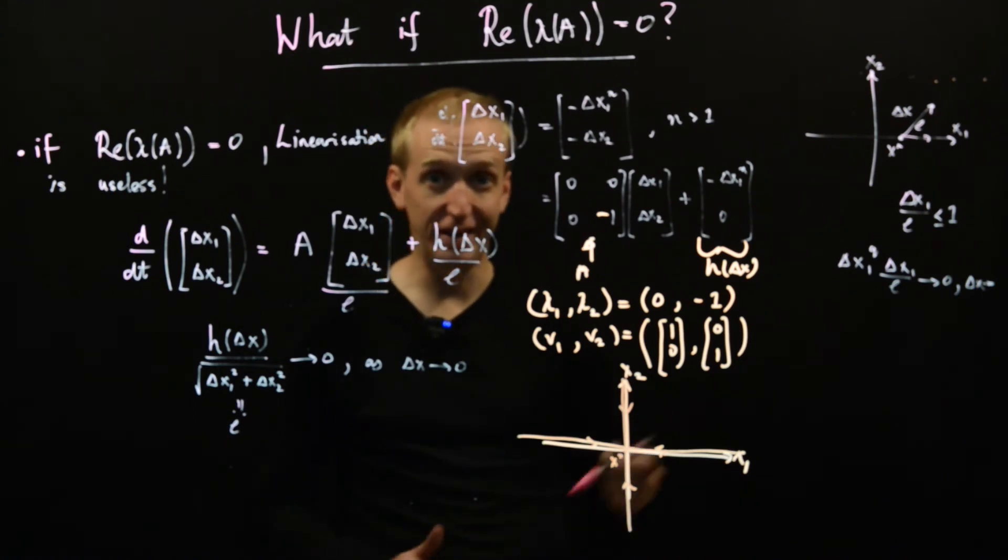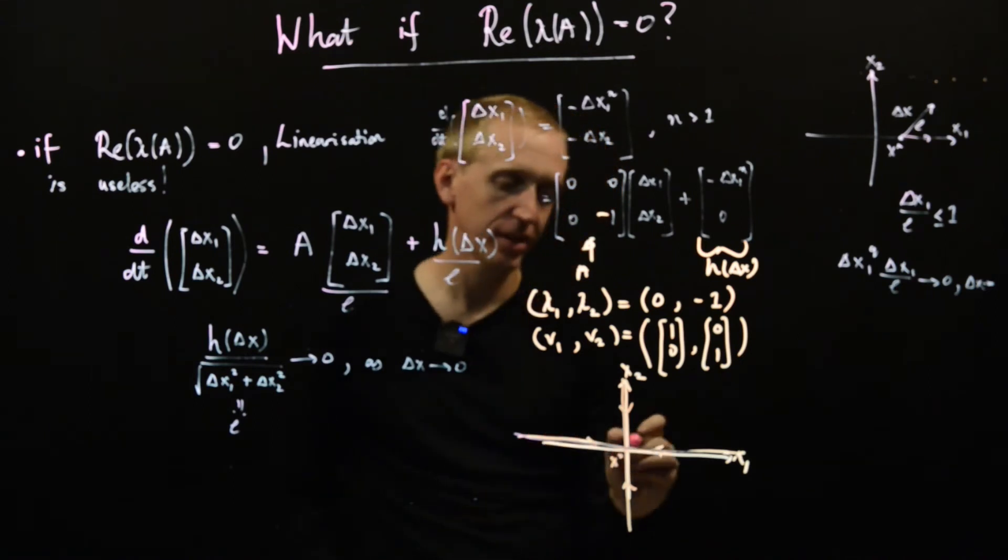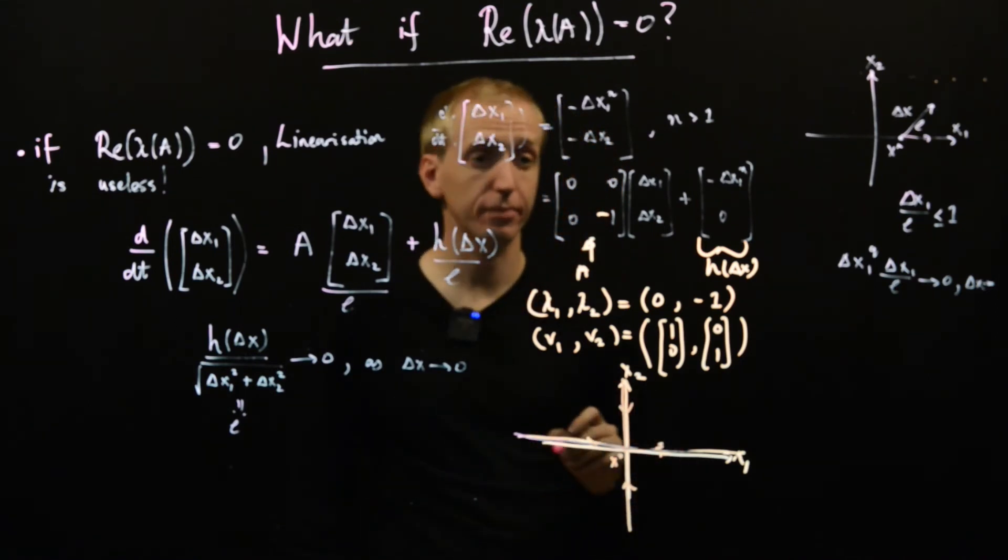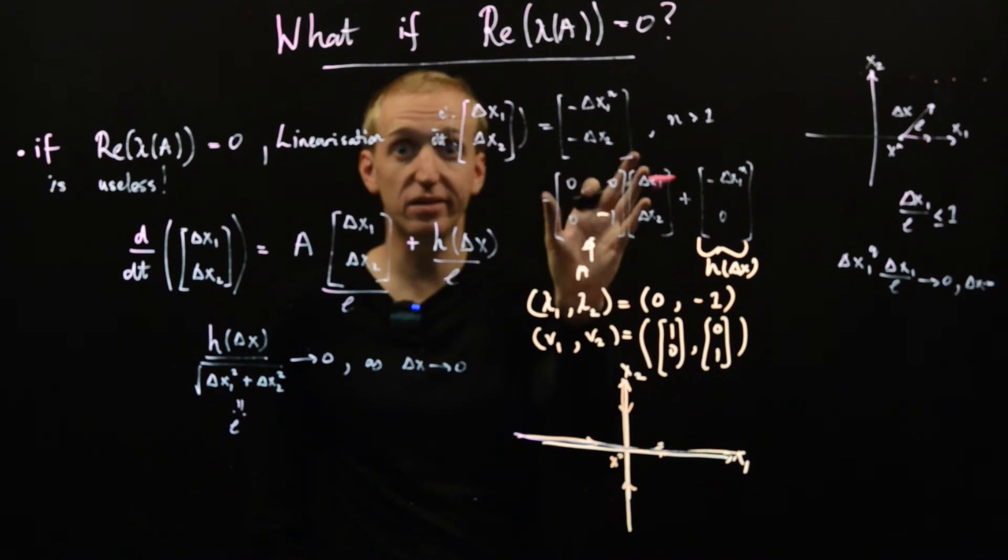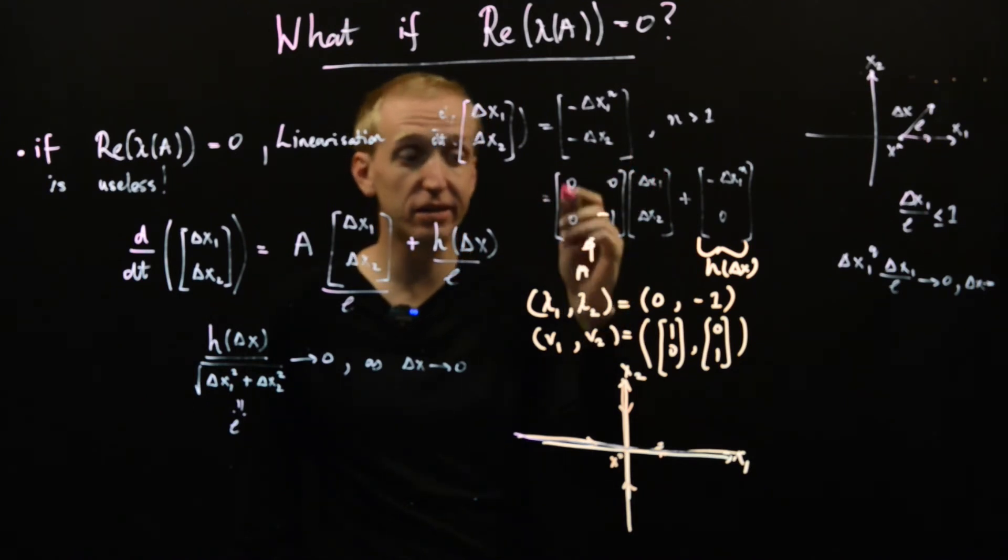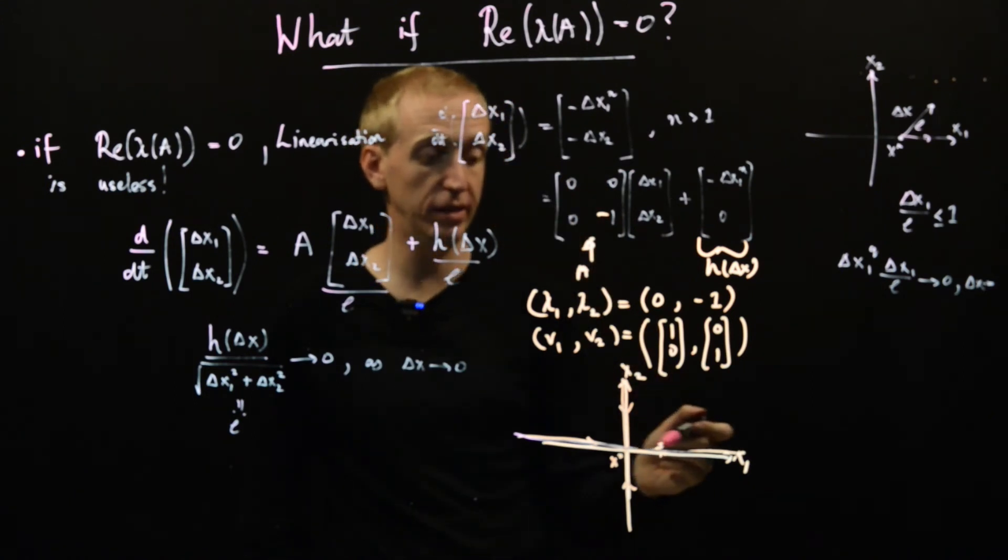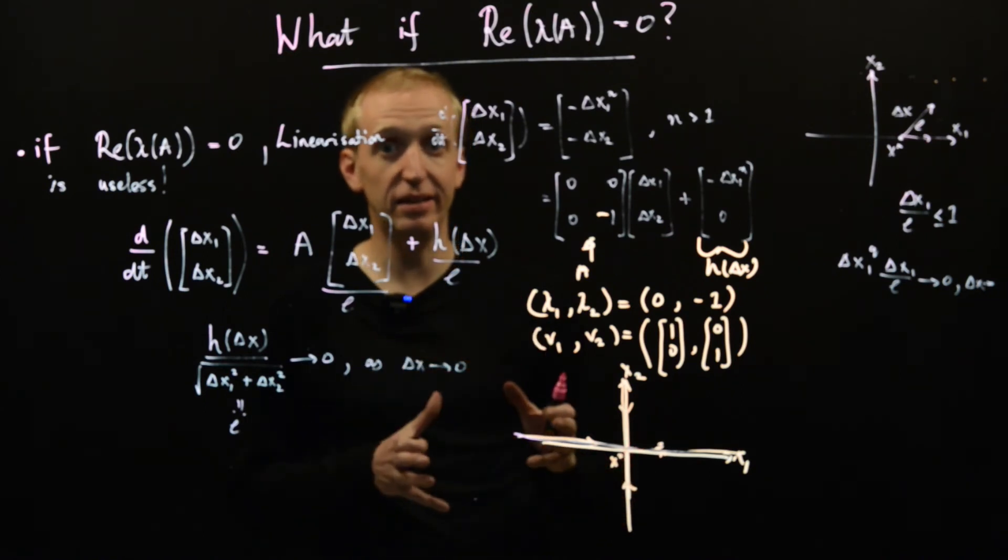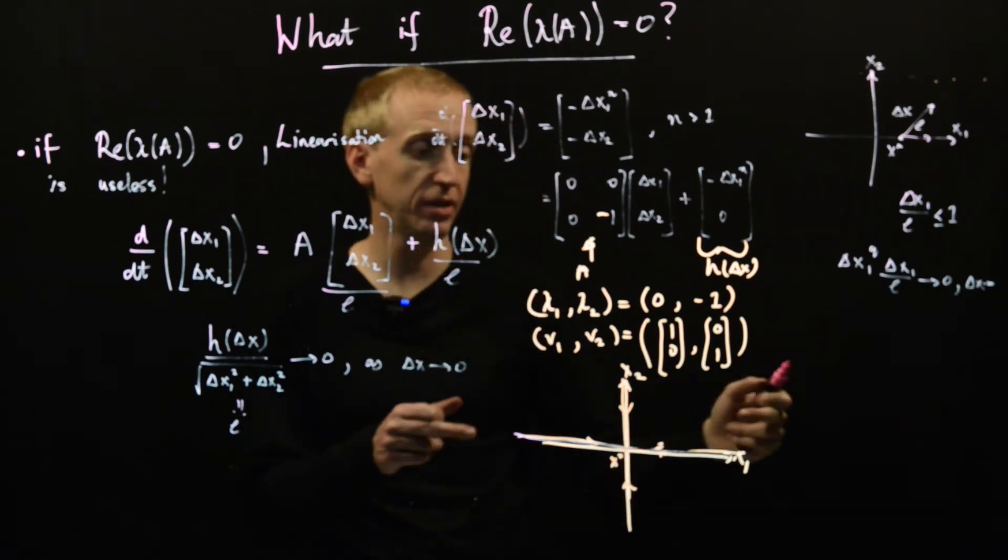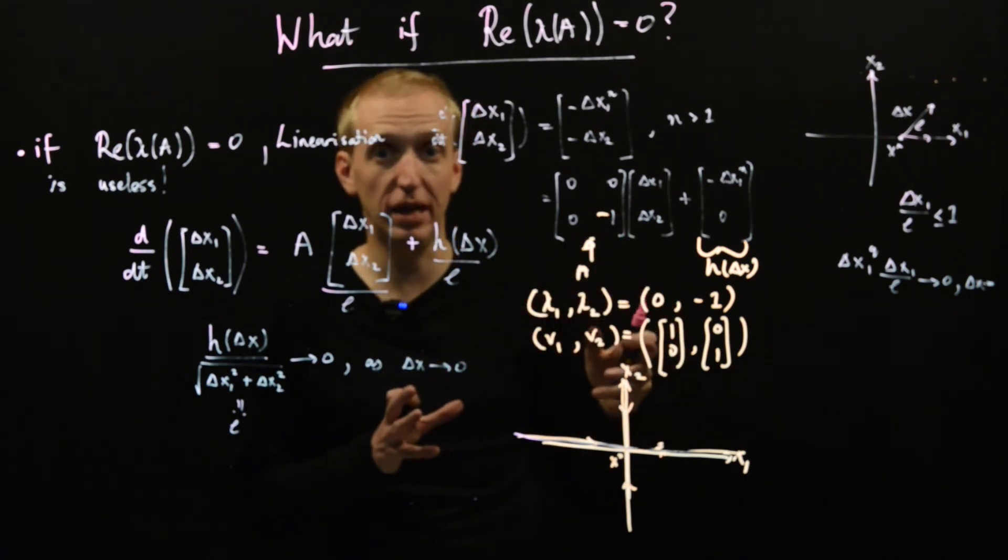But now what happens when we look along the bad eigenvector? Okay, so we take some step here. What does our linearization tell us? Well it tells us if we put in a 1, 0, we put a 1, 0 here, we get 0. So our linear term is contributing nothing towards x dot in this direction. And this is precisely the issue. It doesn't tell us anything about the behavior of x dot in the directions associated with 0 eigenvalues. In order to work out what happens, we have to look at the higher order terms.